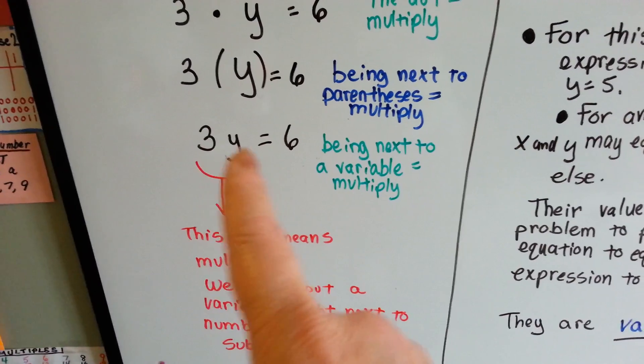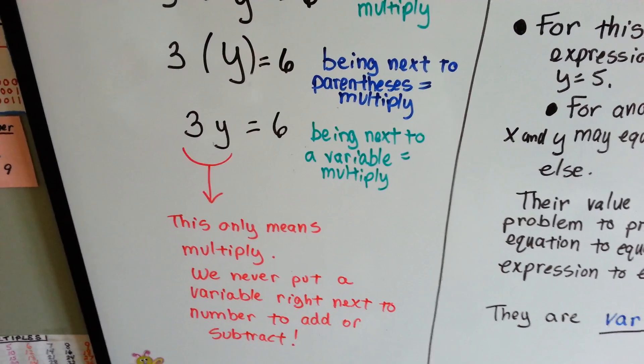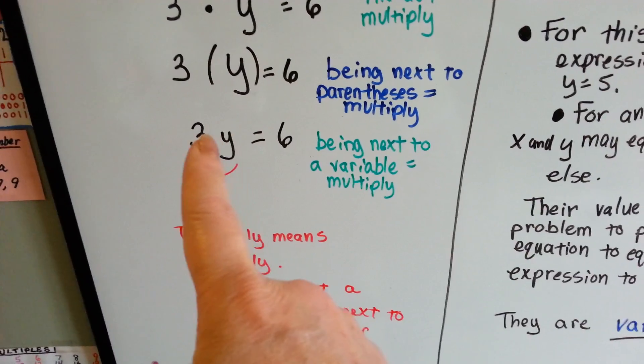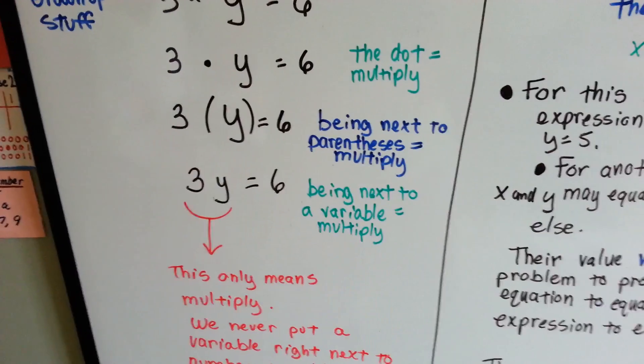Be careful because when you put the letters next to each other it only means multiply. You never do that for adding or subtracting. That only means multiply and it doesn't mean divide either. It's only multiplication.